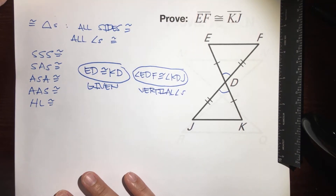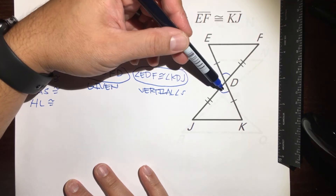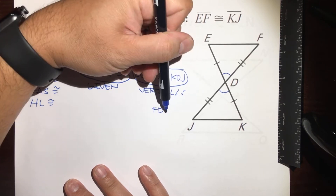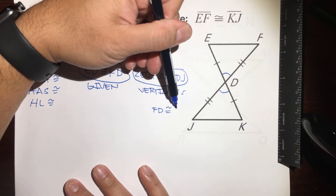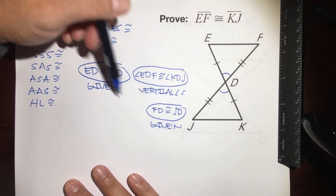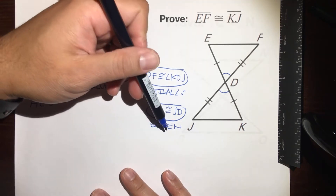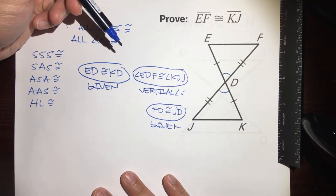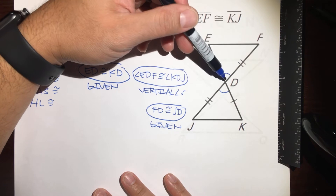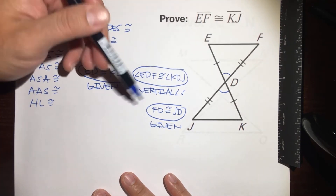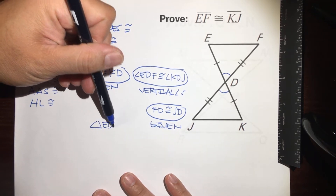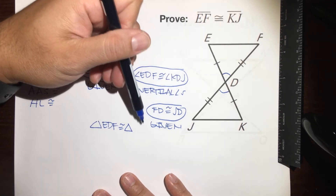We also have this side congruent to this side: FD is congruent to JD, reason: given — those tick marks are already there, don't get the givens wrong, they're given to you. So looking at what we have: a pair of sides, a pair of angles, and a pair of sides. It looks like we have a sandwich — an angle sandwich where the sides are the pieces of bread.